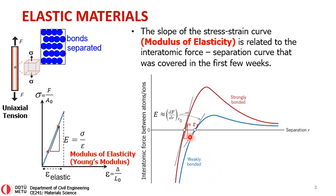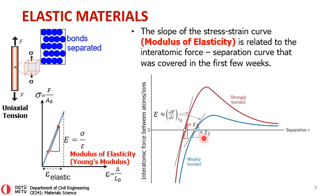For a strongly bonded material we may have E1, and for a weakly bonded case we may have E2. In this case, E1 will be much greater than E2. In other words, it will be difficult for the atoms of the strongly bonded case to separate when compared to the weakly bonded case. So displacements or strains will be lower for E1, and strains will be higher for E2.